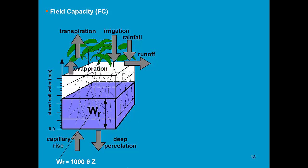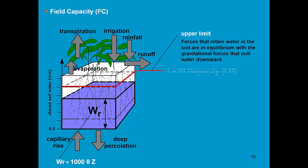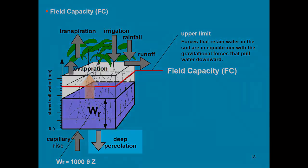Water is retained in the soil because there are absorption forces and capillary forces. There are also gravitational forces which try to pull out the water. But if you are below a certain limit, which is called field capacity, the forces that retain the water in the soil are bigger than the gravitational forces. If you come above field capacity, the gravitational forces are larger.